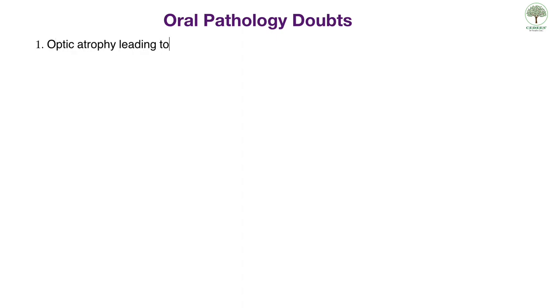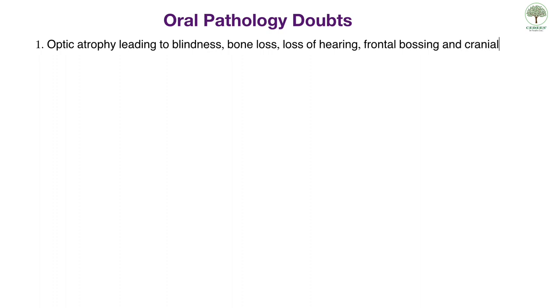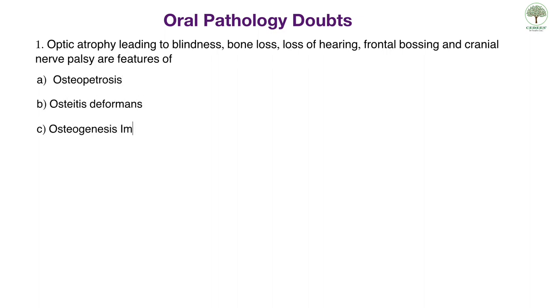In this video we will be discussing the doubts put forward by students. Question one: optic atrophy leading to blindness, bone loss, loss of hearing, frontal bossing and cranial nerve palsy are features of which condition? The options are osteopetrosis, osteitis deformans, osteogenesis imperfecta, and osteitis fibrosa cystica.